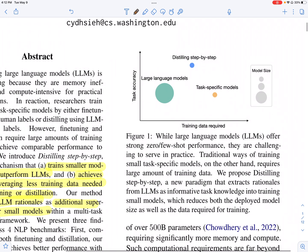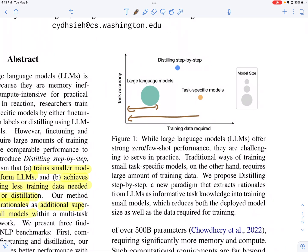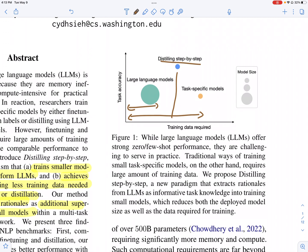When you look at the amount of training data required based on model sizes, you have very large language models which require very little data to perform well on a particular task. Larger language models can do few-shot learning — they do in-context learning — so you don't really need to prompt them with a large amount of data. On the other hand, if you're using the pre-train and fine-tune paradigm, you use a large amount of data to fine-tune a smaller model to perform comparably to the larger language model. Distilling step by step is a midpoint between both: it requires more training data than larger language models, but the model size is way smaller.